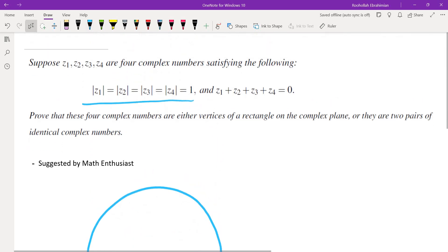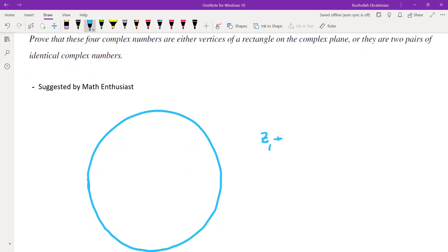The condition that absolute values are 1 tells us that all of these points must be on the unit circle. The assumption that the sum is 0 means the sum of two of them is negative the sum of the other two.